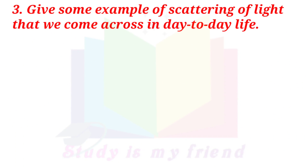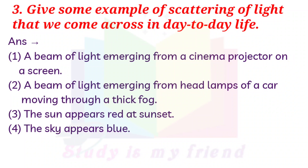Give some examples of scattering of light that we come across in day-to-day life. Answer: 1. A beam of light emerging from a cinema projector onto a screen. 2. A beam of light emerging from headlamps of a car moving through thick fog. 3. The sun appears red at sunset. 4. The sky appears blue.